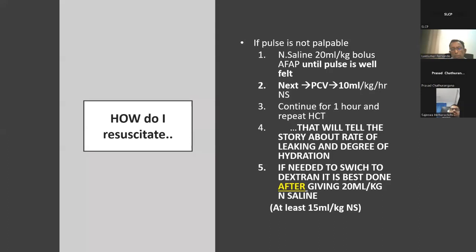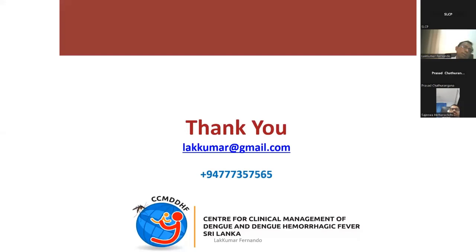If after 20 ml/kg the pulse pressure is still not good, switch to dextran. It is best not to give dextran to a dehydrated patient — always give at least 15–20 ml/kg of crystalloid before starting dextran. This algorithm is given in the guideline. Thank you.